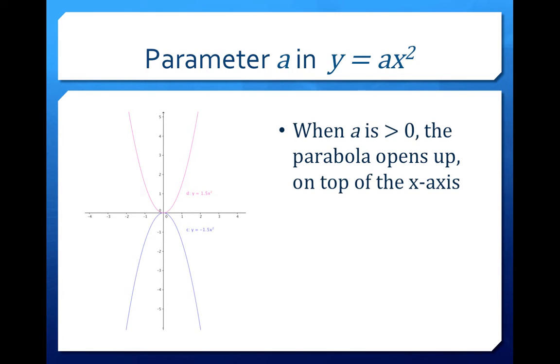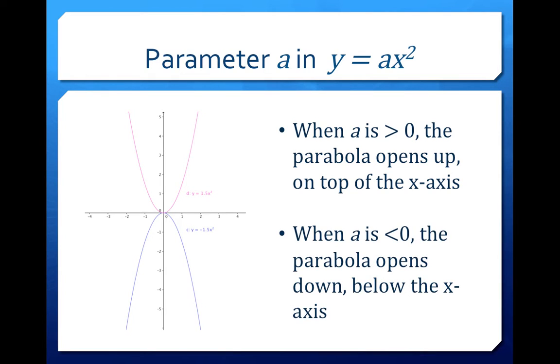We can conclude that when your a is greater than 0, or positive, it opens on top of the x-axis, whereas when it's a negative a, it opens down. So notice that it's really like the reflection of the positive a. It reflects on the x-axis when the a becomes a negative.